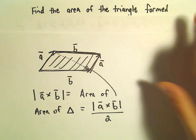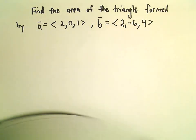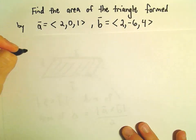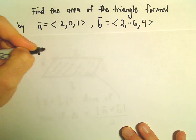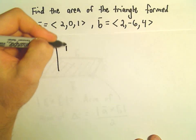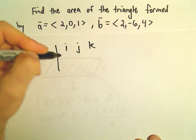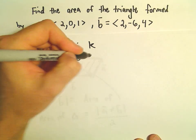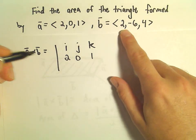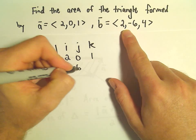Alright, so the first thing I'm going to do is find the cross product, A cross B. So to do A cross B, we've got I, J, K. Vector A has components 2, 0, 1. Vector B has components 2, negative 6, 4.